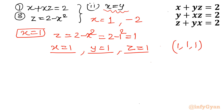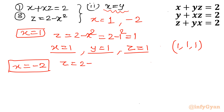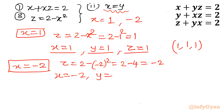Now for x equal to negative 2: z equal to 2 minus negative 2 whole squared equals 2 minus 4 equal to negative 2. Since x equal to y, we have x equal to negative 2, y equal to negative 2, and z equal to negative 2. So the second solution set is (negative 2, negative 2, negative 2).